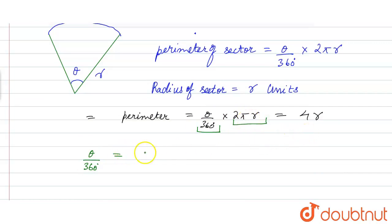So r and r will cancel out and two twos are four, so 2 upon π is the value of theta by 360. Let it be equation 1.